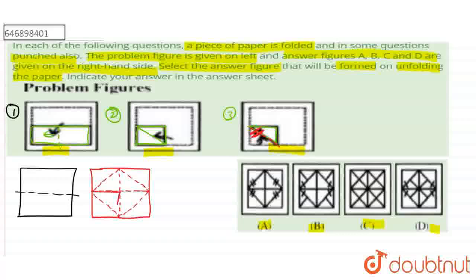If we see this part, we have cut this side, so this part, this side, this side. When we unfold, this side will come here, and this part will come here.